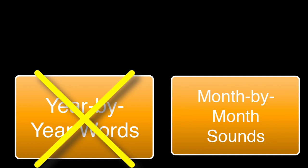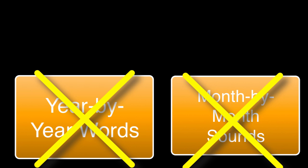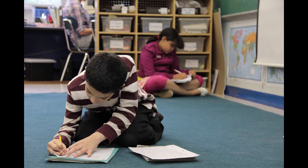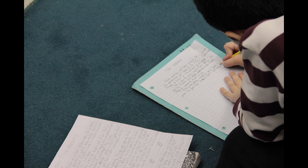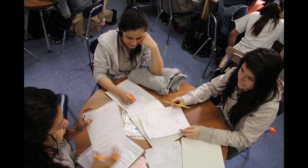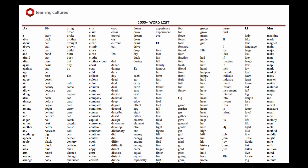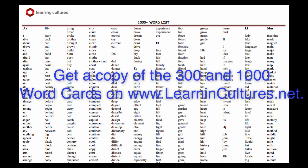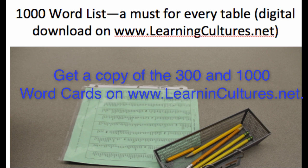Words are not dispensed according to the linear transmission model — a child doesn't have to learn one set of words or sounds or letters before they learn another in a series. They learn whatever words, letters, or sounds they need as they're using them; they're given when needed and learned through use. Kids are also given word cards. In all classrooms through high school, there are word cards on all tables during reading and writing time so that kids can write the most frequently used words automatically, fluently, and accurately.